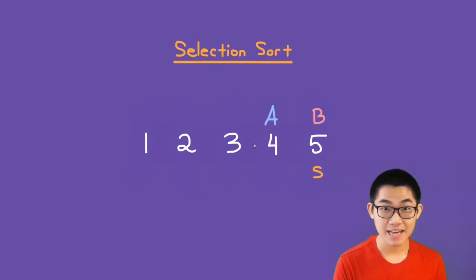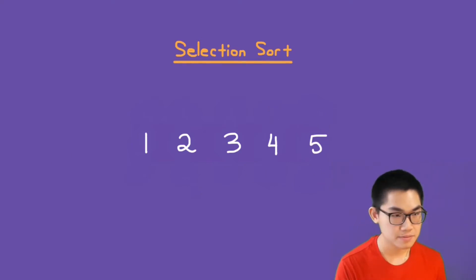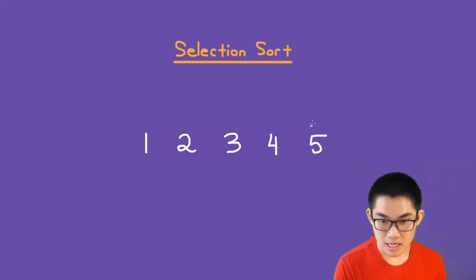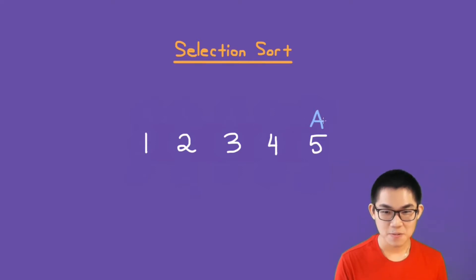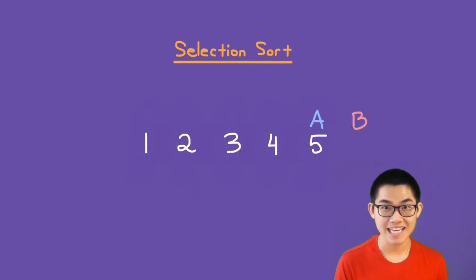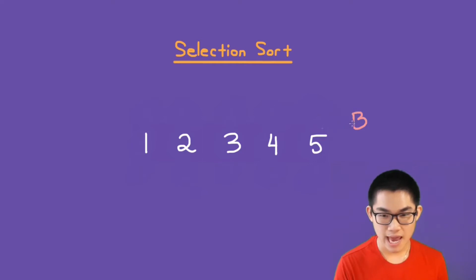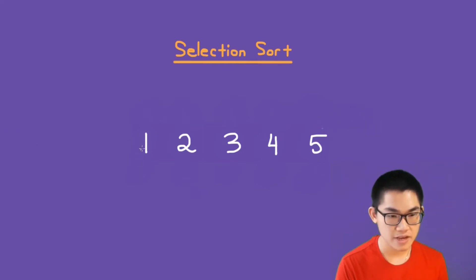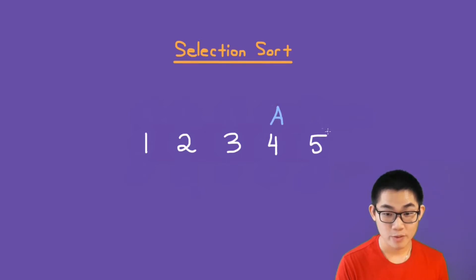The mistake that most people make is putting A onto the last element. If you put A onto the last element, then what is B going to compare to? B will be out of the array and you will get an index out of bounds error. The point is that A goes from the beginning of the array and stops at the second last element — it will not go onto the last element.